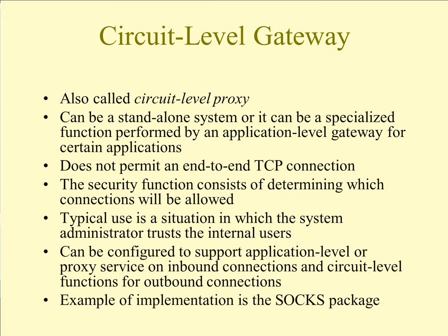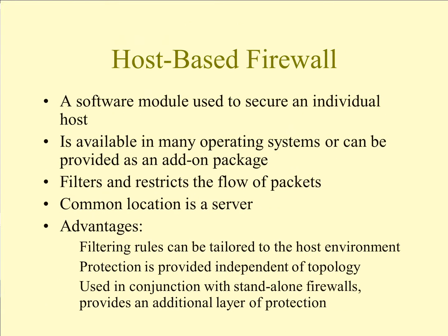The last type of firewall is the circuit level gateway. This could be a standalone system or a specialized function performed by an application level gateway for certain applications. It does not permit end-to-end TCP connections. Rather, the gateway sets up two TCP connections — one between itself and a TCP user on an inner host, and one between itself and a TCP user on the outside. Once those two connections are established, the gateway relays TCP segments from one connection to the other without examining the contents. Security consists of determining which connections will be allowed. There is a little more overhead because we now have to maintain two TCP connections at the firewall.